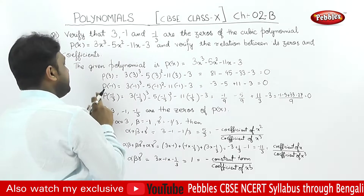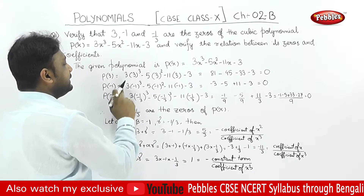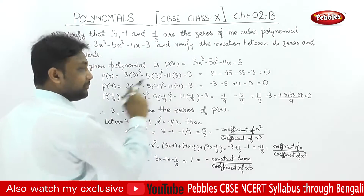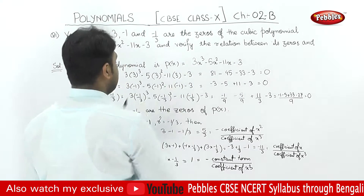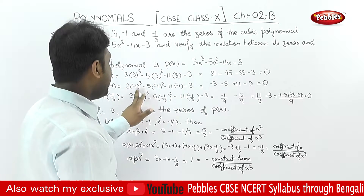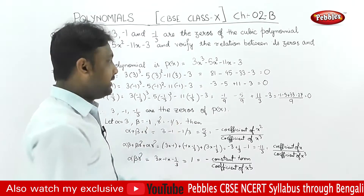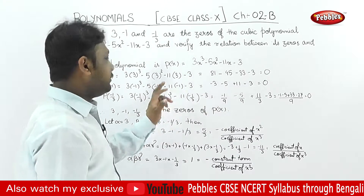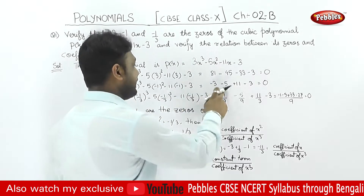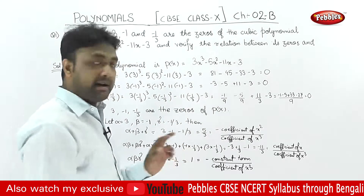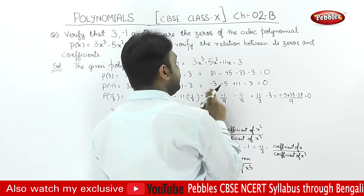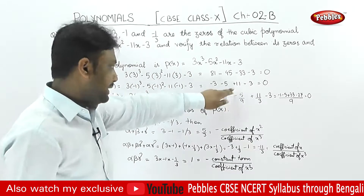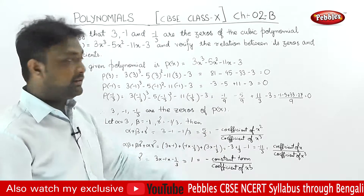For x equals minus 1: P of minus 1 equals 3 into (minus 1) cube minus 5 into (minus 1) square minus 11 into (minus 1) minus 3. That is minus 3 minus 5 plus 11 minus 3, which equals minus 8 plus 11 minus 3, equals 0.